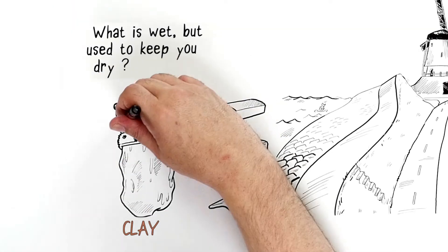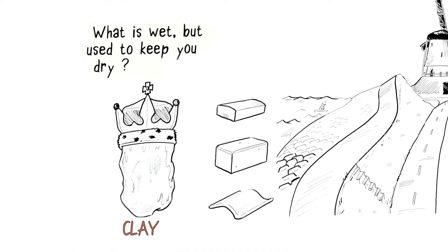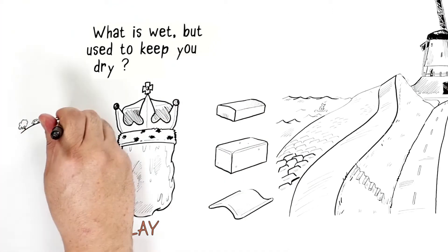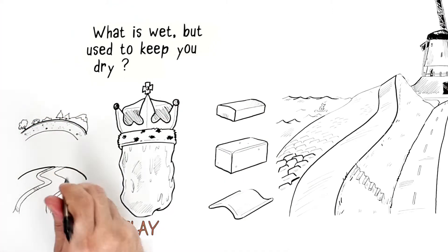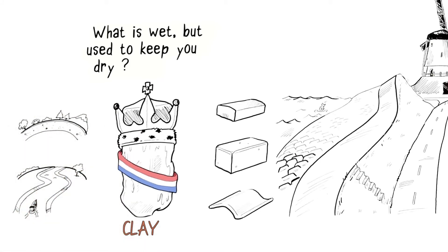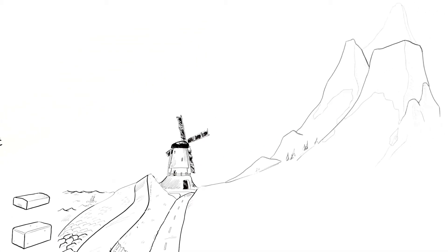But where does it come from, and what makes it so special? Clay is a natural and widely available mineral that can be extracted from both the crust of the earth and rivers. Dutch river clay originated from the Alps is used for the production of Dutch bricks and roofing tiles.